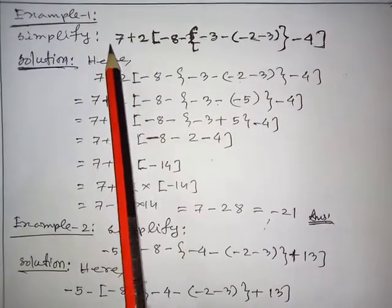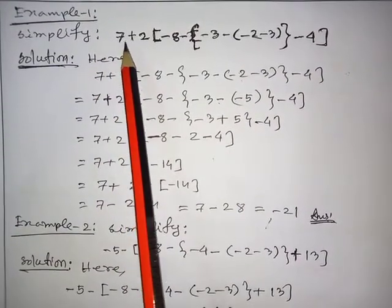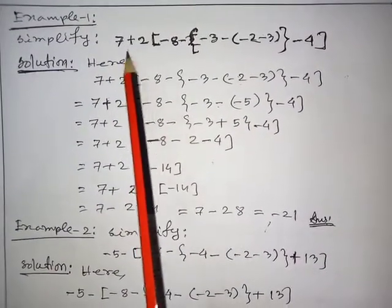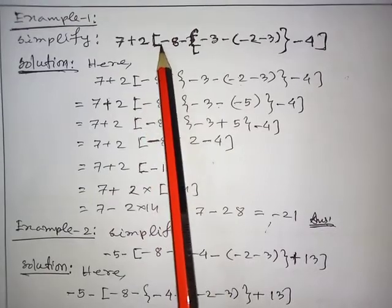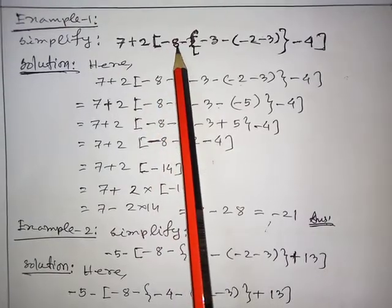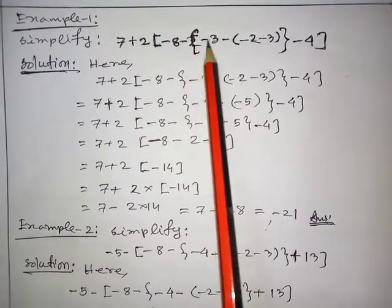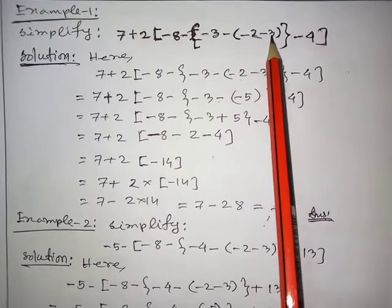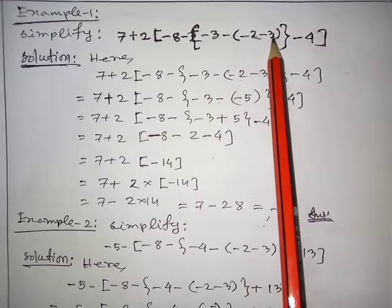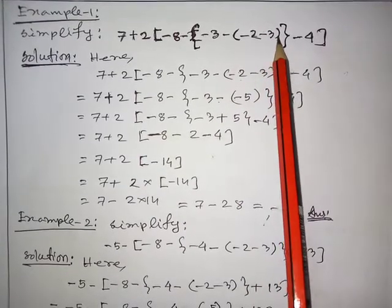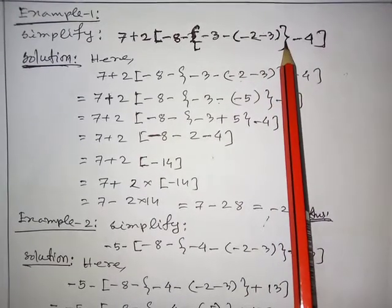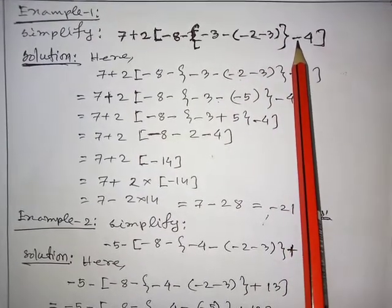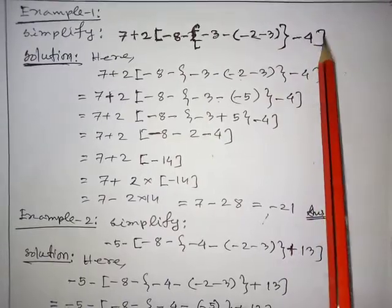I have taken here a problem: 7 plus { minus 8 minus [ minus 3 minus 2 ( minus 2 minus 3 ) ] minus 4 } close. This is the expression we will simplify.